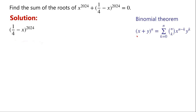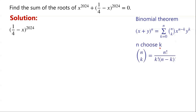we know that (x + y) to the power of n equals the sum from k equals 0 to n of n choose k, times x to the power of n minus k, times y to the power of k, where n choose k equals n factorial over k factorial times (n minus k) factorial.